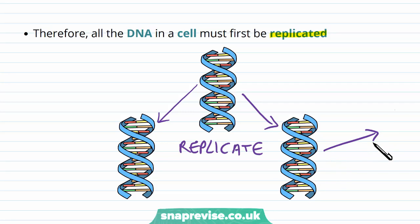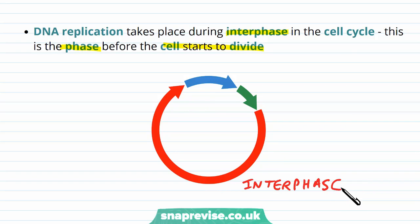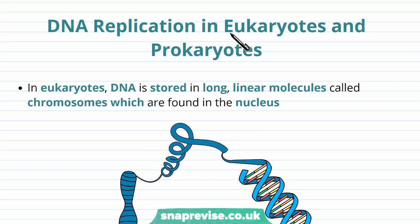If a cell is to divide, it needs to replicate its DNA again, so every cell ends up with a complete set. DNA replication takes place during an important part of the cell cycle called interphase — the phase just before cells start to divide. The cell cycle is the sequence of events that cells always go through in their life. Interphase is the stage where the cell is not dividing but carrying out other functions. This includes the S phase, where DNA is replicated. Now that we've talked about why DNA replication is important, let's look at how it actually occurs for eukaryotic and prokaryotic cells.